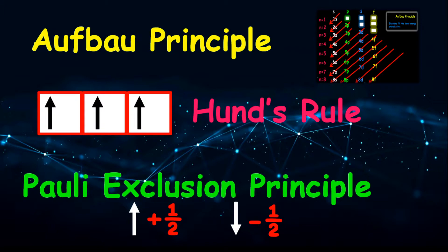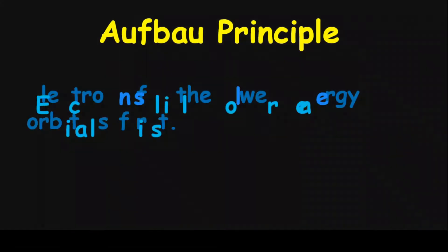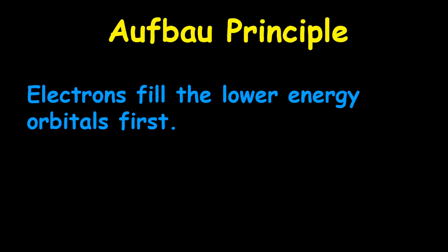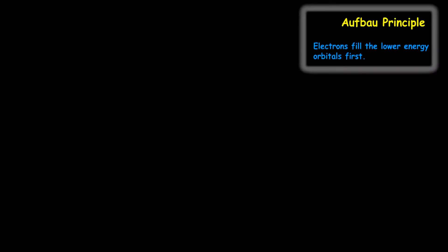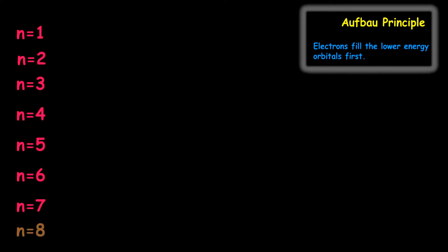Let us start with the off-bar principle first. The off-bar principle states that electrons fill the lower energy orbitals first. To understand this, we think about the number of shells or energy levels, and we assign N values to each energy level. In reality, N will stop at 7, meaning the maximum shell you have in reality is the 7th shell. However, in theory, we can go beyond that and assign any values.